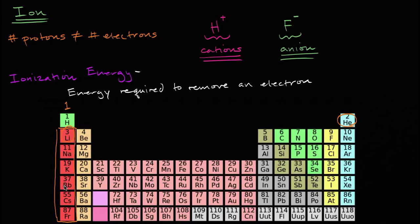For sodium, potassium, and so on — if you take an electron away from them, their outermost shell is going to have the electron configuration of the noble gas before it. For sodium on down, that outer shell is going to have that perfect eight. So you can imagine that the ionization energy — the energy required to remove electrons from your alkali metals — is very low.